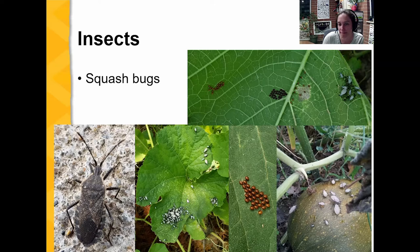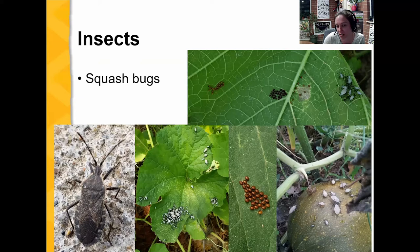Their eggs are these red, closely clustered eggs found on the undersides of leaves. If they are in clusters like this, those are squash bug eggs. The spaced-out ones over here are most likely squash vine borer eggs. They go through small sizes when they just hatch and then gradually get bigger. Smaller nymphs are much easier to control with insecticides than once they reach the adult stage — adult stages are very, very hard to control with any type of insecticide.